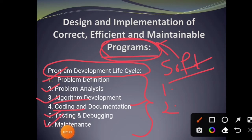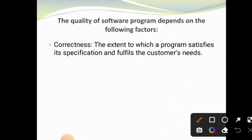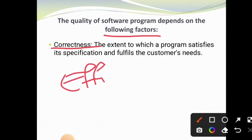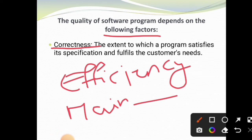The last phase is maintenance. Maintenance means we need to maintain the software. The quality of a software program depends on the following factors: correctness, efficiency, and maintainability. These are the three factors the quality of a software program depends on.